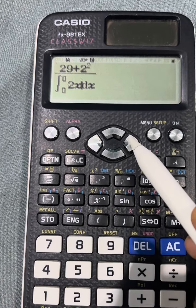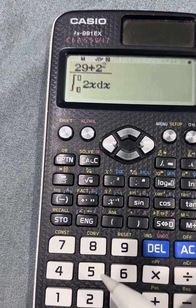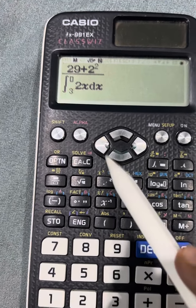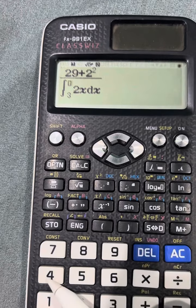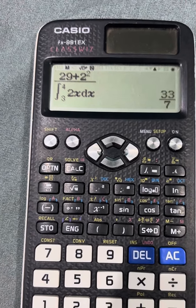Again use the cursor. What are the upper and lower limits for the definite integral? Here it is 3 and then here it is 4. So move the cursor and press equal.